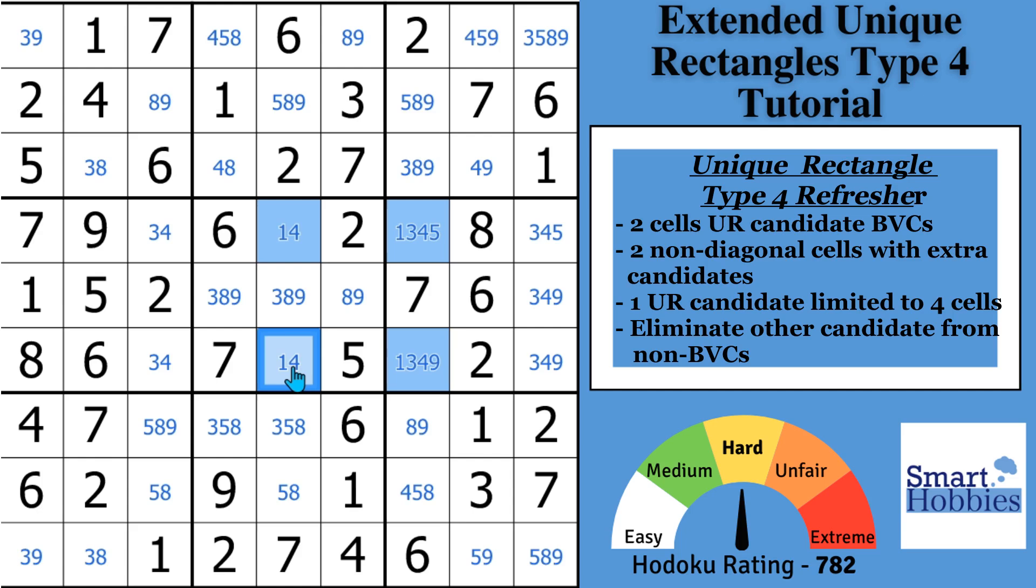Then two non-diagonal cells have extra candidates. You'll notice these also contain 1-4, but they also contain extra candidates. They've got a 3 and a 5 in this cell and a 3 and a 9 in this cell. Now, one of the unique rectangle candidates is restricted to the 4 cells. You may notice a 1 can only be in these 4 cells. A 1 can't be anywhere else in this block or this block or along rows 4 or 6.